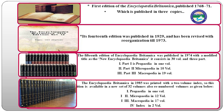Macropedia was published in 19 volumes as part of the 30-volume set. What is Propedia? Propedia is an outline. Micropedia contains short information — a paragraph or two lines — providing brief information. Macropedia contains longer articles or long paragraphs with detailed information. These are the three parts: Propedia, Micropedia, and Macropedia.